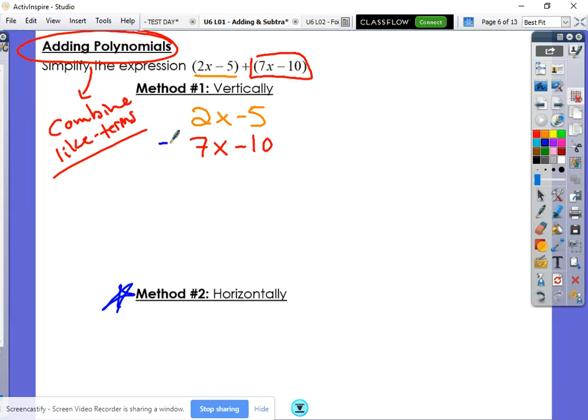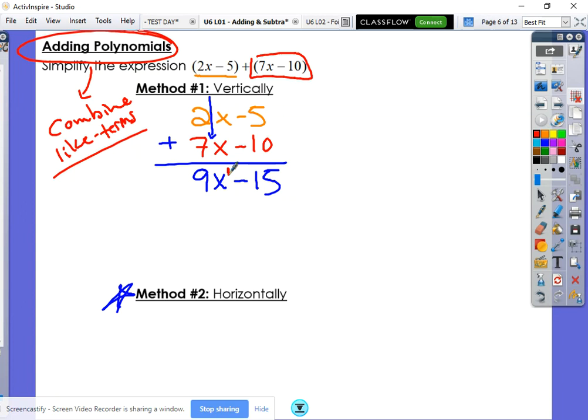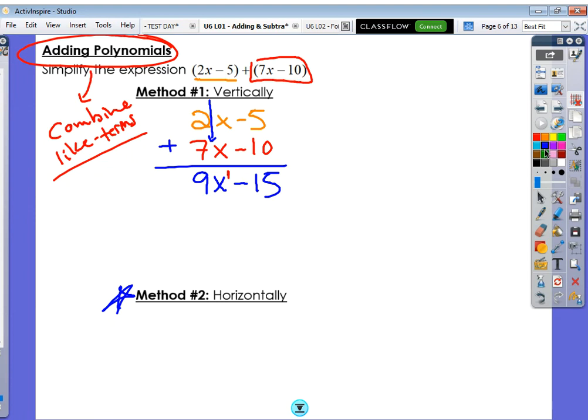And then we say, hey, we're going to add these together. So just like elementary school, you add vertically. So that would give us 9x and then negative 5 and negative 10 gives us negative 15. There you go. Notice that my exponent on the x stayed the same. It did not change.